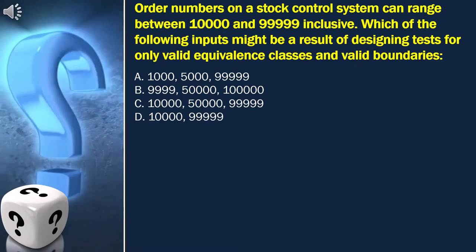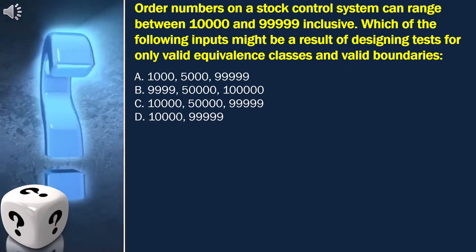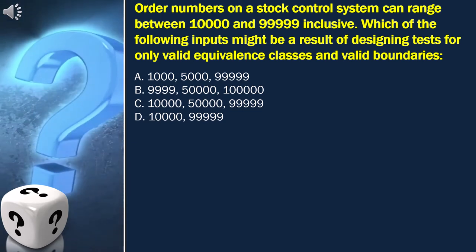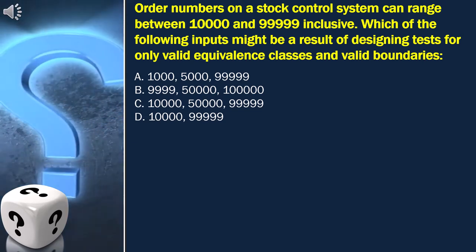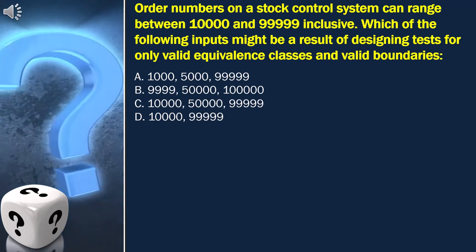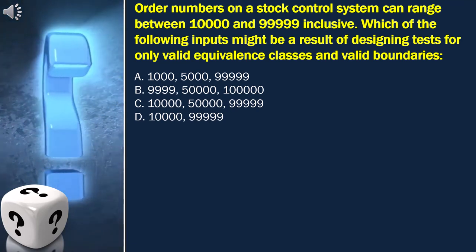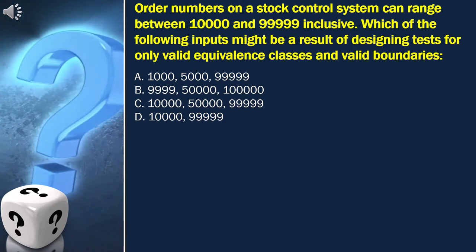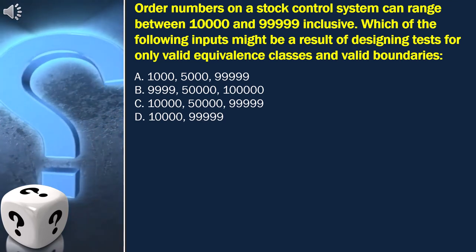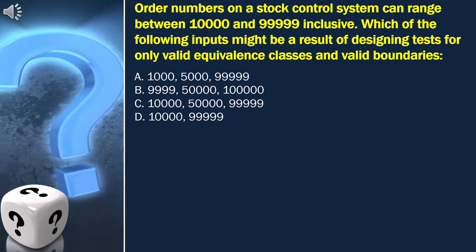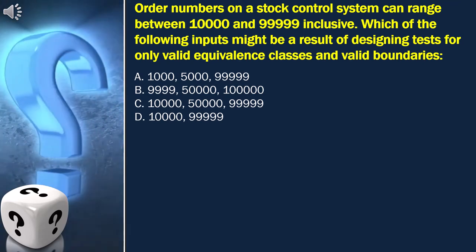Here the question is, order numbers on a stock control system can range between 10,000 and 99,999 inclusive. Which of the following inputs might be a result of designing tests for only valid equivalence classes and valid boundaries?